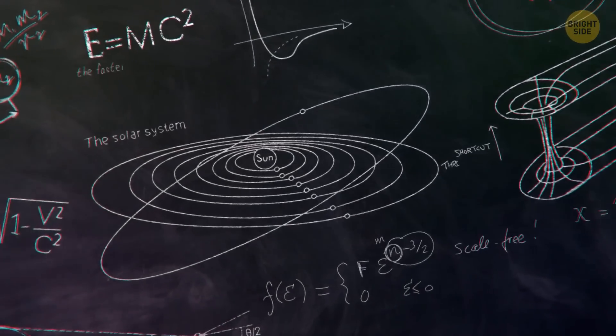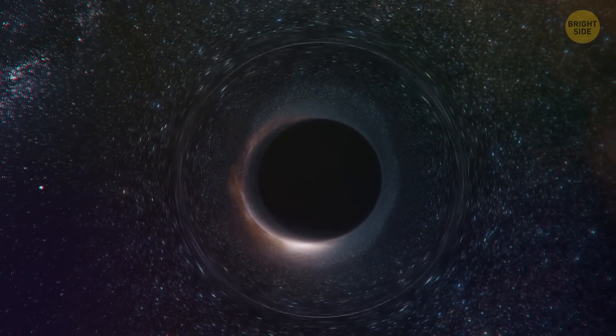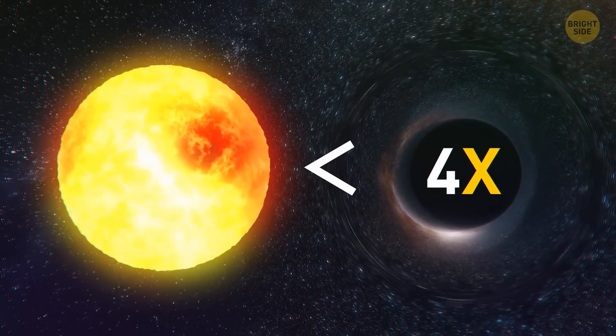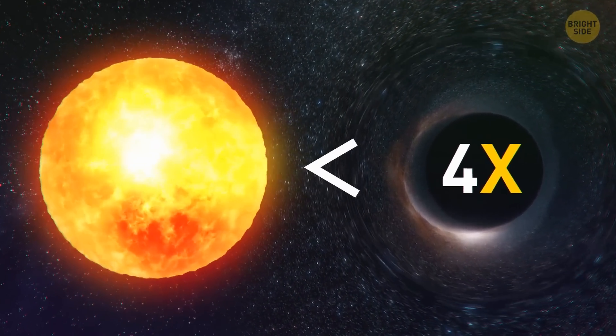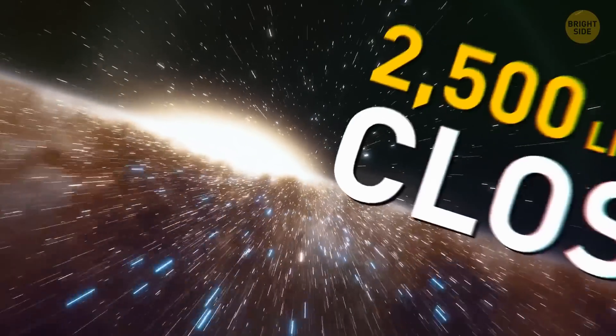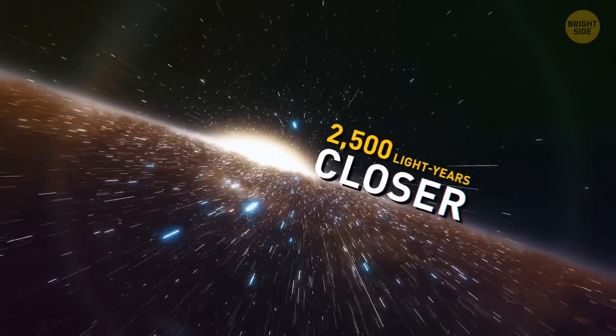This particular black hole is considered relatively small. But despite this, its mass is four times bigger than our Sun, and it's 2,500 light-years closer to Earth than the next nearest black hole.